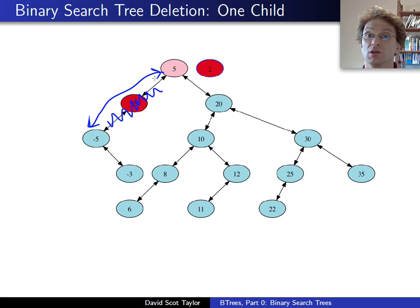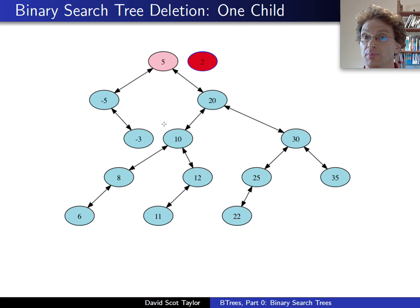Because, look, negative 5 is smaller than 5. If 2 wasn't there, this tree works just fine. Let me clean that up a little bit. And now, 2 is not in the tree anymore. It's been deleted from the tree. No problems.